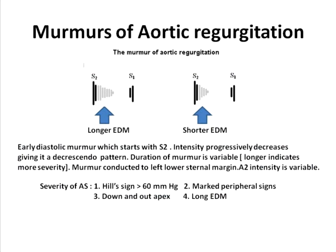The murmur of aortic regurgitation is an early diastolic murmur which starts after S2. The intensity progressively decreases after S2, giving a decrescendo pattern. It is a difficult-to-hear murmur, and the duration is variable — the longer the murmur heard after S2, the more severe the AR. The murmur is conducted to the left lower sternal margin.